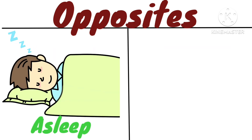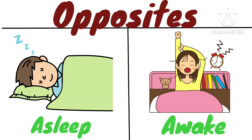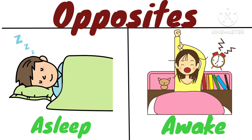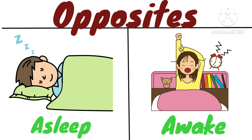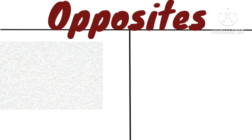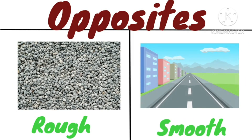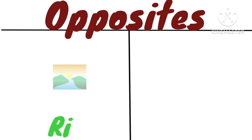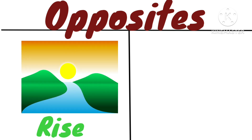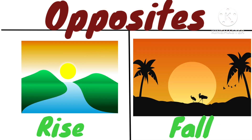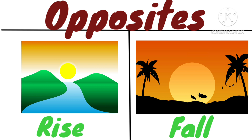Opposite of asleep is awake. The boy fell asleep while listening to the music, and the girl awakes in the morning. Opposite of rough is smooth — rough road and smooth road. Opposite of rise is fall — the sun rises from the east and falls in the west.